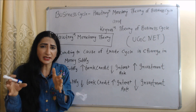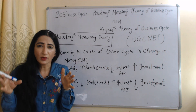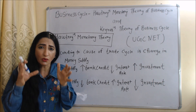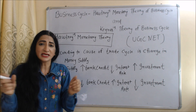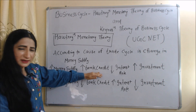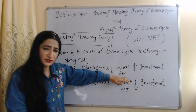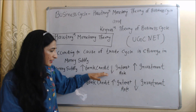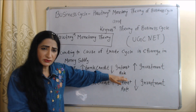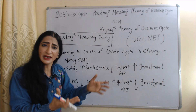According to Hawtrey's Monetary Theory of Business Cycle, the main cause of trade cycle is change in money supply. For example, when money supply increases, bank credit will also increase. When bank credit increases, interest rate falls, because now banks have more money to give as loans, so they reduce interest rates so that people can take more loans.